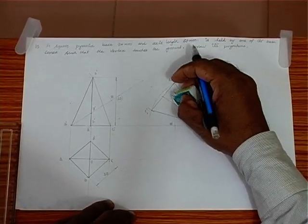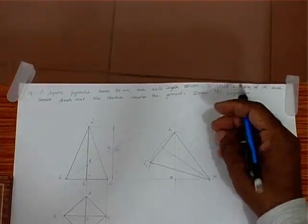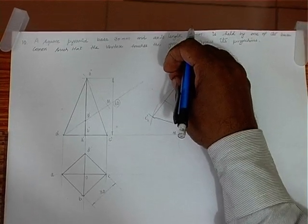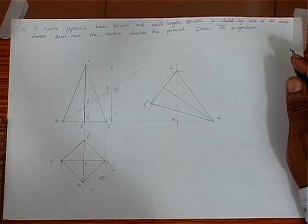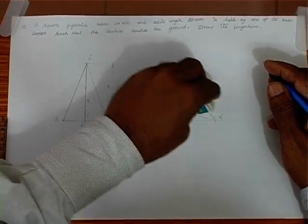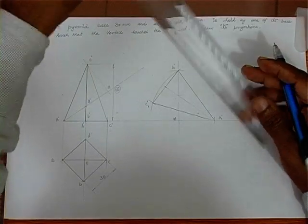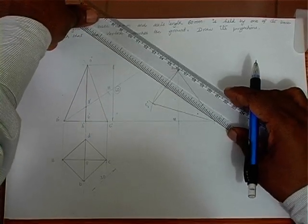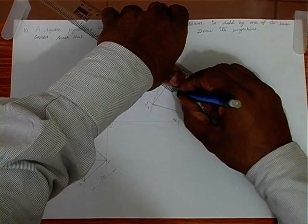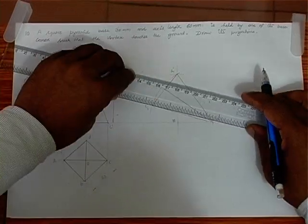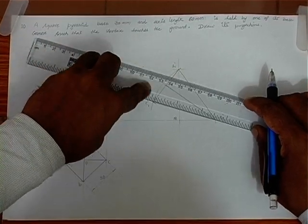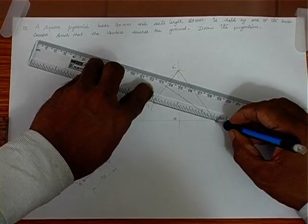So we just complete the diagram — we will be able to get the complete front view. This is the final front view, wherein the square pyramid with 30 mm base and 60 mm height is held with one corner such that the vertex is touching the XY line. So we give a proper axis line — that is very important. Make a proper axis line; even if there is a small deviation, you will be wrong. Then you connect all the edges — this is the complete front view.